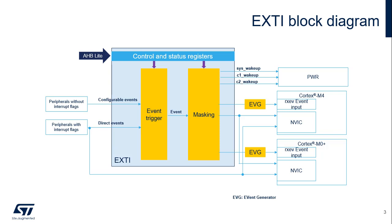This is the block diagram of the Extended Interrupt and Event Controller. Configurable events are generated by peripherals without interrupt capability, but which are able to issue a pulse. The EXTI Controller provides interrupt detection, masking, and software trigger. Direct events are generated by peripherals supporting interrupt requests. In this case, the EXTI Controller is used to generate events to the CPU and to request system wake-ups.